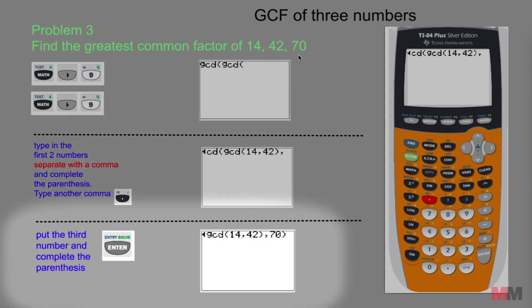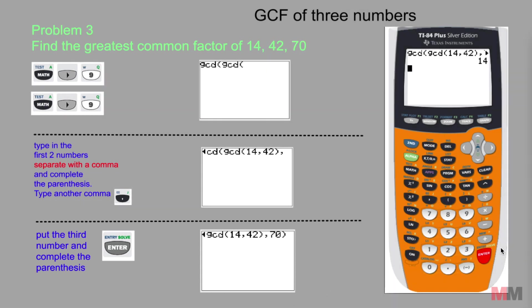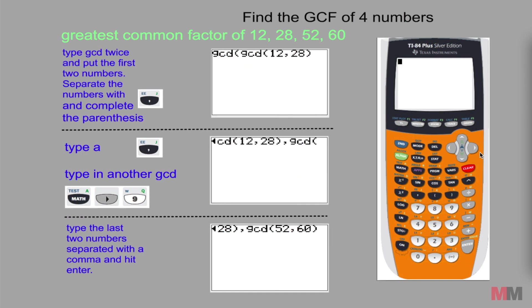Type in the third number, 70. And once you have that, complete the parentheses and just hit enter and boom, you got your answer, 14. 14 is the number that is the biggest which divides into 14, 42 and 70. Moving on to the last example.